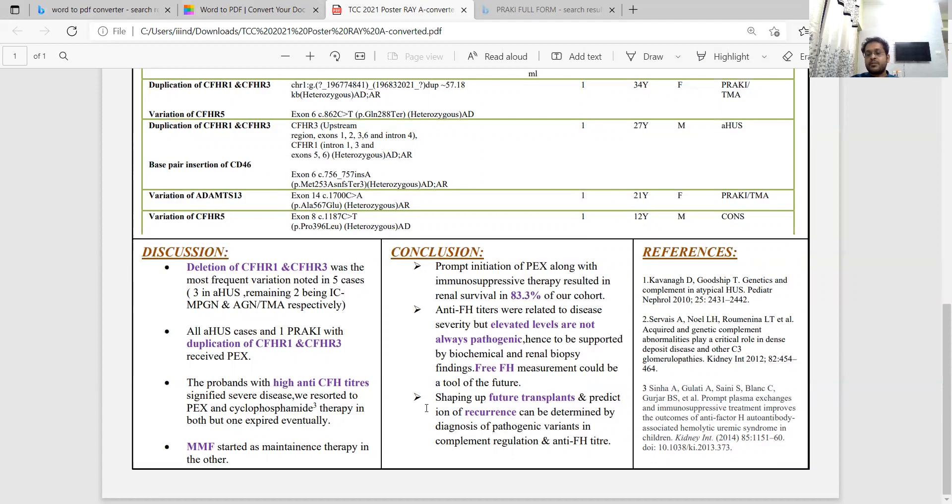What I'd like to conclude is that in resource-constrained areas like ours where eculizumab is not available, prompt initiation of PLEX followed by immunosuppressive therapy can result in better renal outcomes. 83.3% of our cohort didn't require long-term hemodialysis and had near-normal renal function. This therapy aims to stop antibody production and can be monitored by anti-CFH antibody measurement by ELISA.